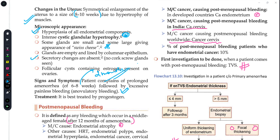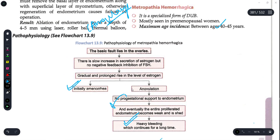If a question is asked about metropathia hemorrhagica, the correct option will be that it is a type of dysfunctional uterine bleeding — specifically the anovulatory type. An option may state that the bleeding is very painful, but remember that in metropathia hemorrhagica, the bleeding is painless. The treatment is with progesterone, because it is the deficiency of progesterone that causes the endometrium to fail to maintain itself and shed off. By supplying progesterone, this condition can be treated.